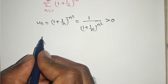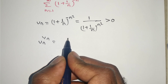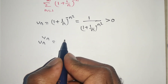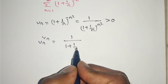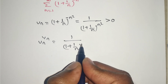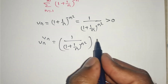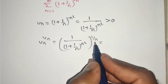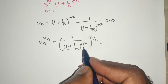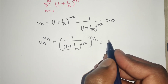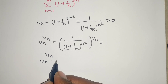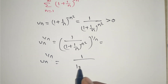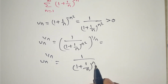We can apply the nth root on both sides. Applying the nth root: uₙ^(1/n) = 1/(1 + 1/n)^(n²·(1/n)). The n and n² cancel one power of n, giving uₙ^(1/n) = 1/(1 + 1/n)^n.